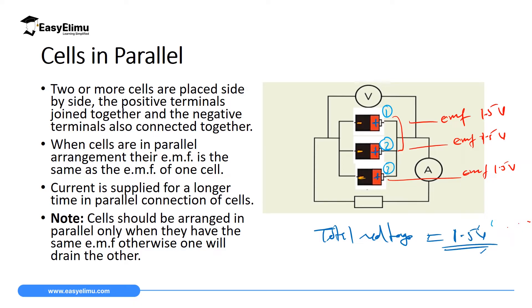Remember, this is different from when we have cells in series. We said when we have cells in series, if they are 3, the total voltage would be 1.5 plus 1.5 plus 1.5, which was bringing us 4.5. But for parallel arrangement, even if you have 10 cells arranged in parallel, the voltage which you will read on the voltmeter will be the same as that of one cell — in our case of 1.5, it will be 1.5.